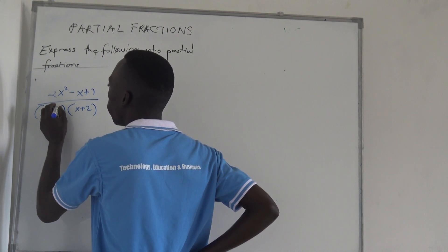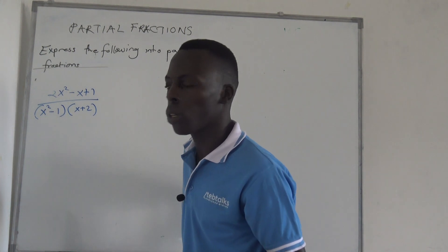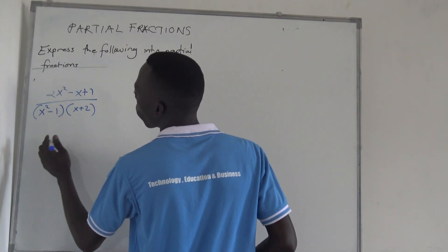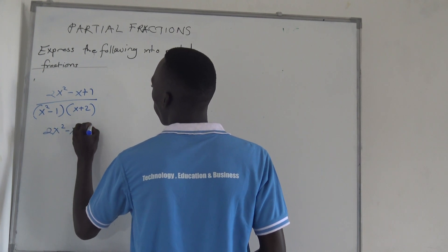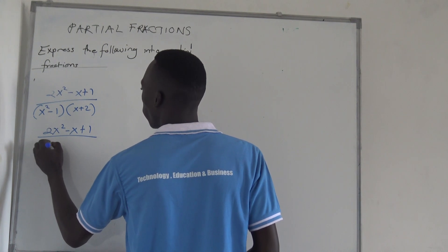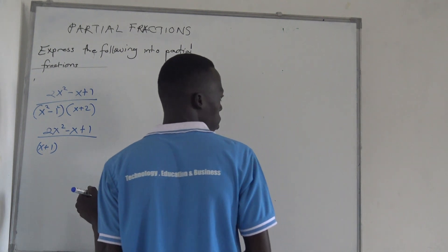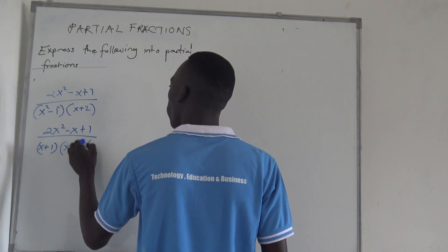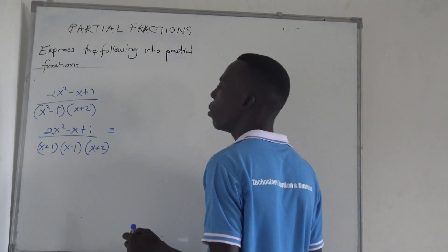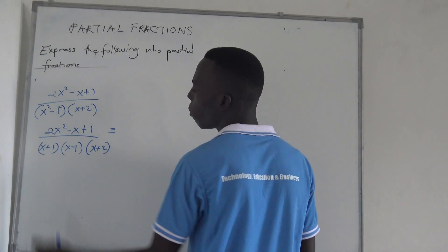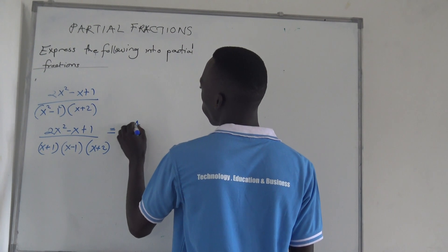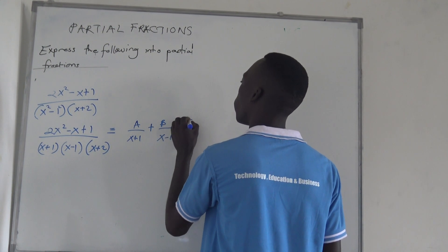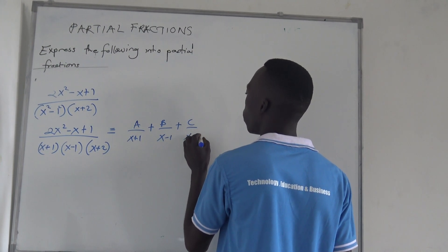Since x squared minus 1 is a difference of two squares — x squared minus 1 squared — we apply the difference of two squares formula. So x squared minus 1 becomes x plus 1 times x minus 1. Therefore the full expression is 2x squared minus x plus 1, out of x plus 1 times x minus 1 times x plus 2.